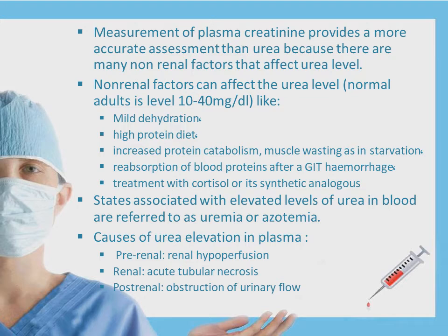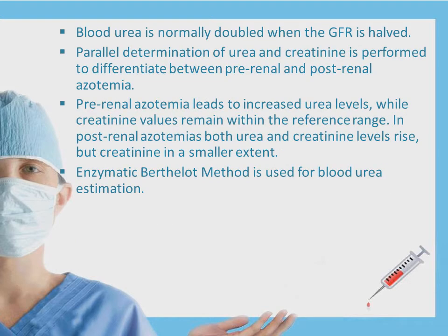Other factors affecting urea level include mild dehydration, high protein diet, increased protein catabolism, reabsorption of blood, or treatment with cortisol. States associated with elevated levels of urea in blood are referred to as uremia or azotemia. Causes of urea elevation could be pre-renal, renal, or post-renal. Blood urea is normally doubled when glomerular filtration is halved. Parallel determination of urea and creatinine is performed to differentiate between pre-renal and post-renal azotemia: pre-renal azotemia leads to increased urea while creatinine remains within normal range, whereas in post-renal azotemia, both urea and creatinine are increased.